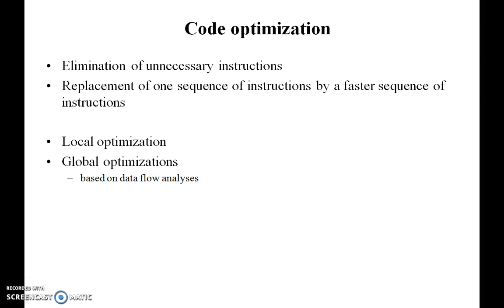What is Code Optimization inside the compiler? Code Optimization is one of the phases of the compiler, presented as the fifth phase. The purpose of Code Optimization is to optimize the coding and improve the efficiency of the compiler. It is mainly used for elimination of unnecessary instructions, that means the redundancy of data, and it improves the efficiency of the compiler for a faster sequence.